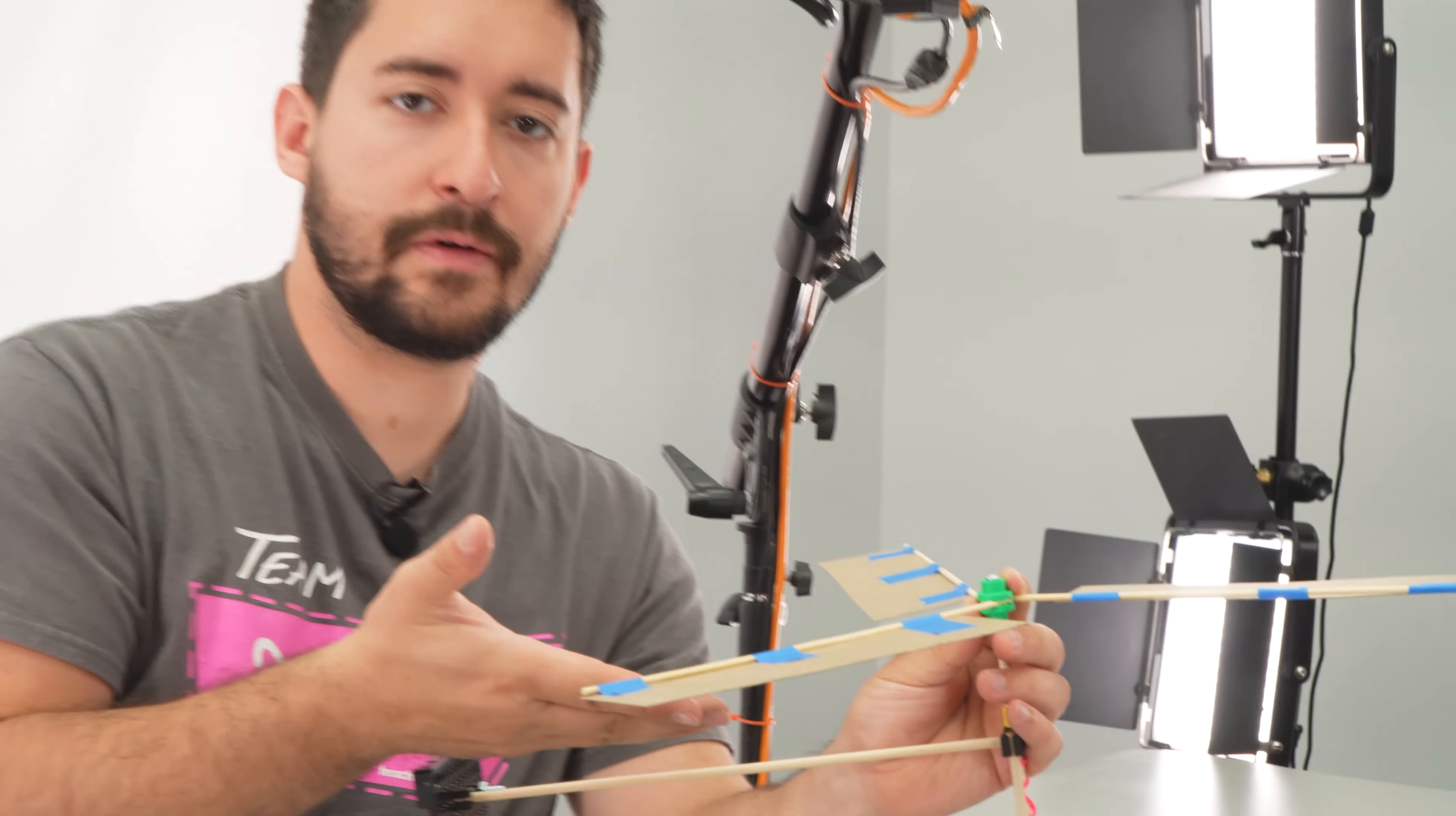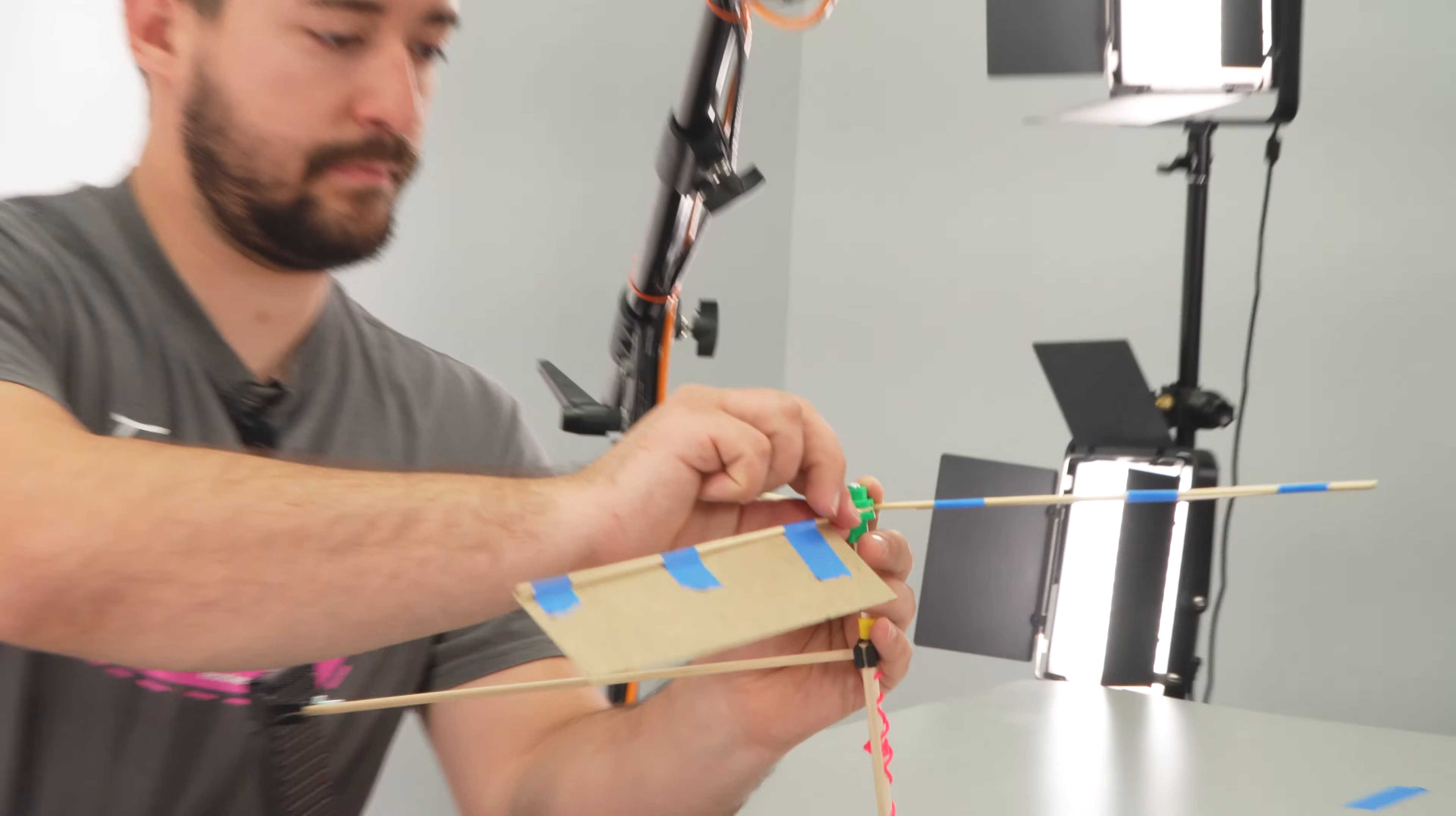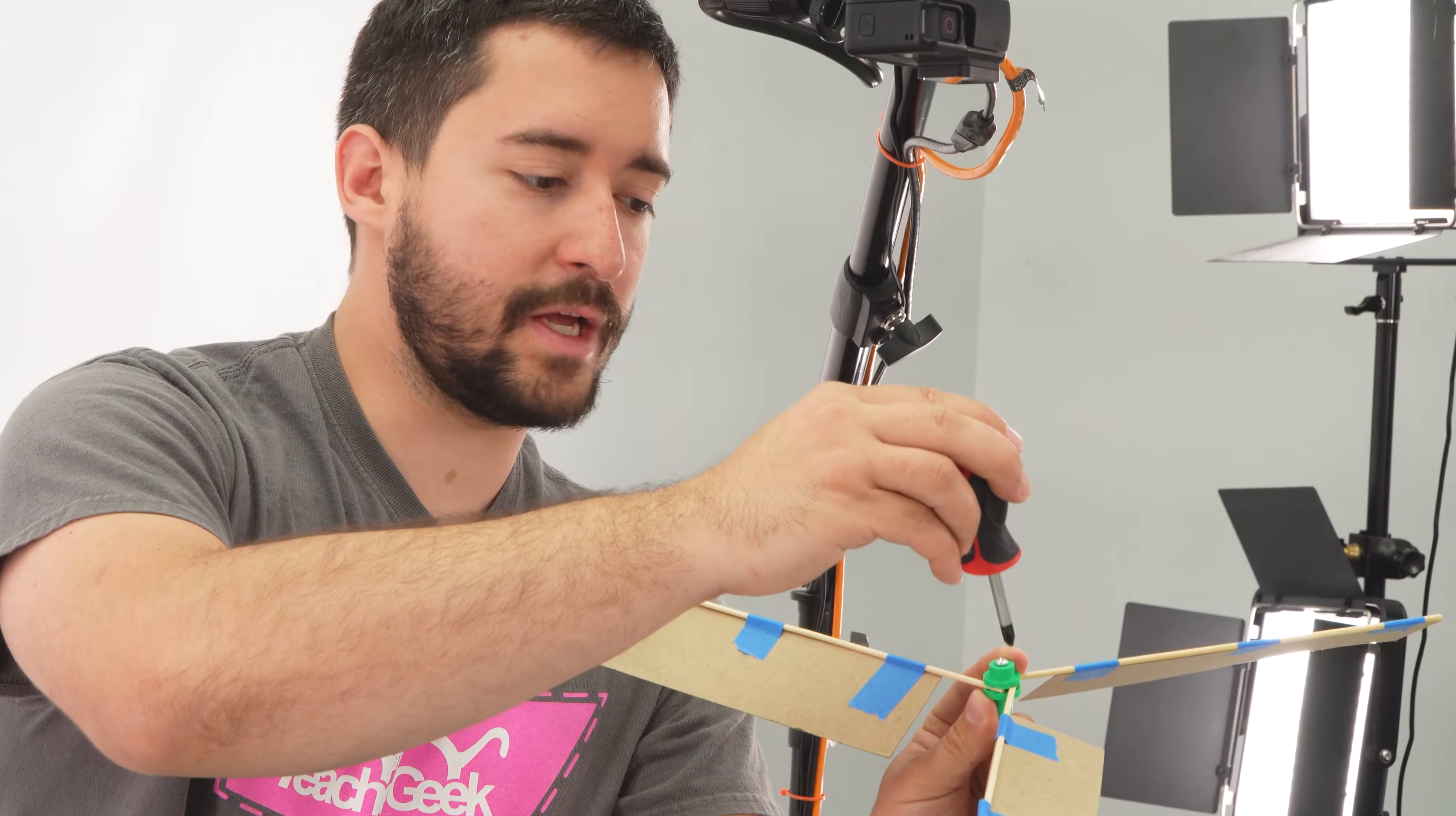Before I tighten this up, I need to make sure that my blades are angled. The angle on the blades is what's going to make them spin. Now that they're angled, I'm going to tighten up that screw to hold them in place.